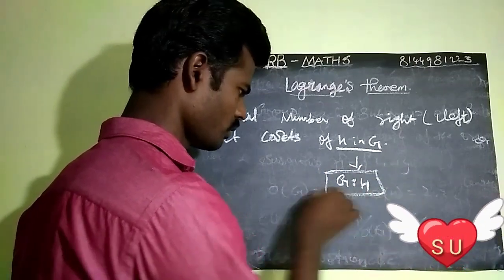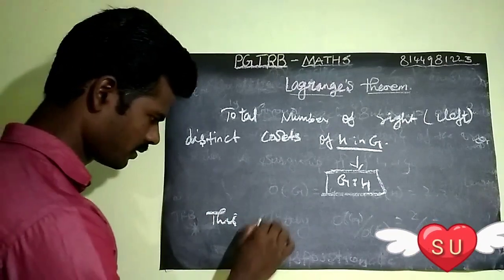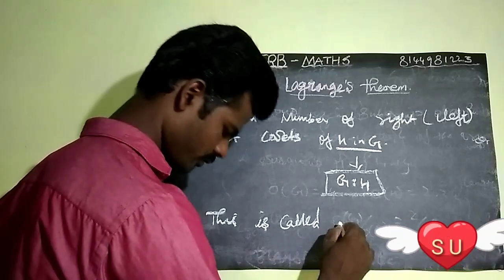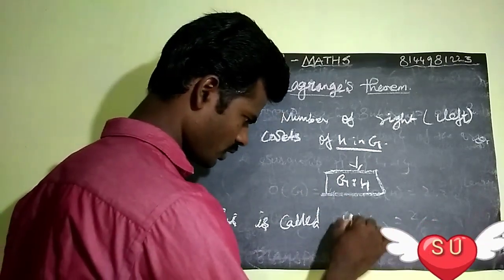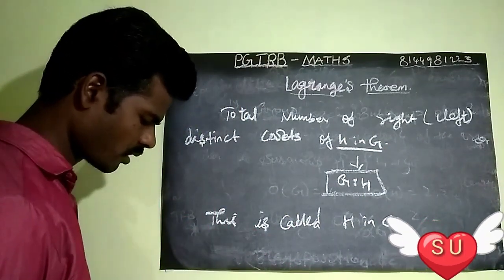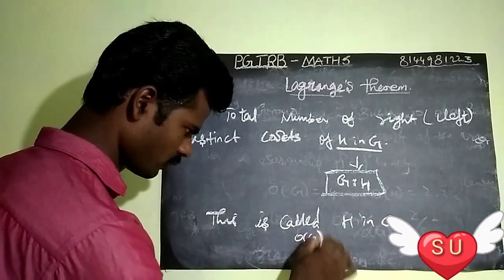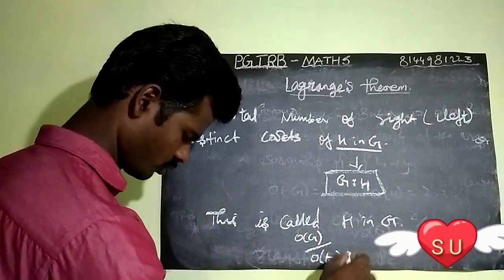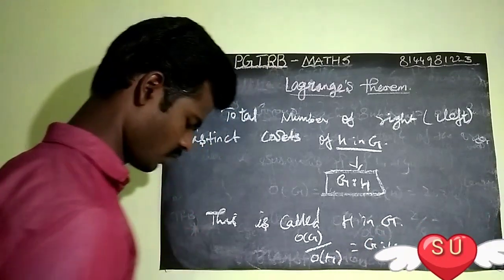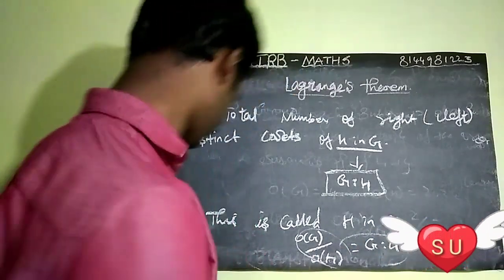This is called the index of H in G, written as [G:H]. The order of G divided by the order of H equals [G:H]. So this notation gives us the index of H in G.